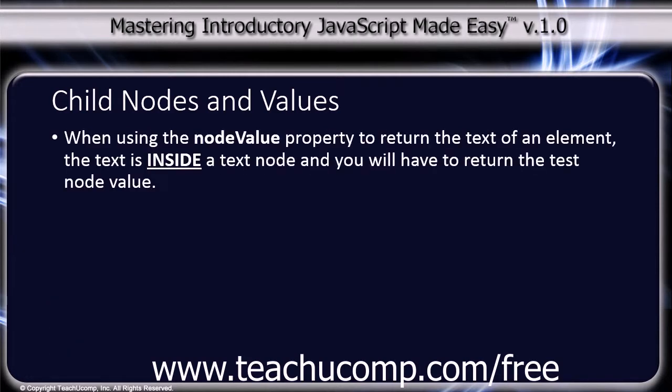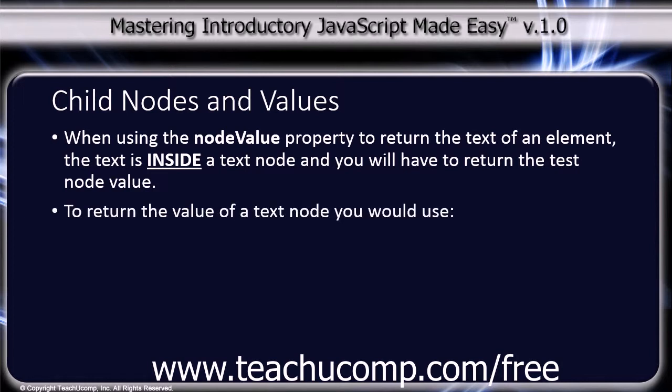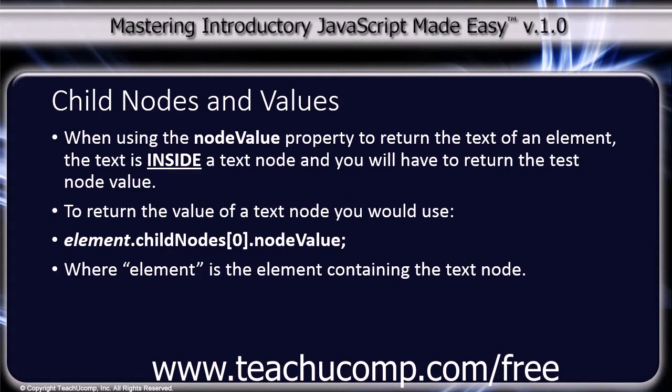When using the nodeValue property, it is important to remember that if you are trying to return the text of an element, the text is inside a text node and you will have to return the text node value. To return the value of a text node, you would use element.childNodes[0].nodeValue, where element is the element containing the text node.